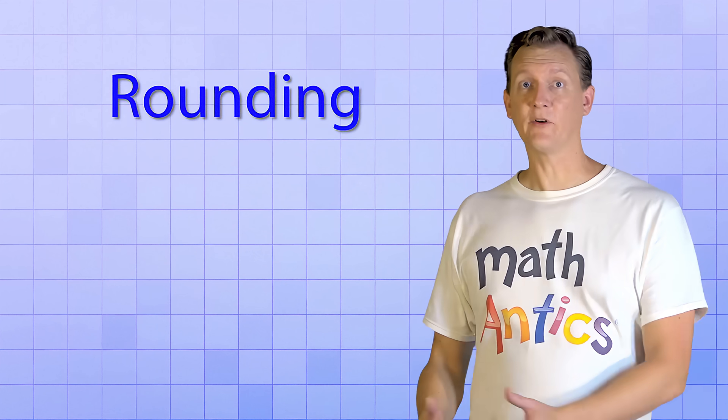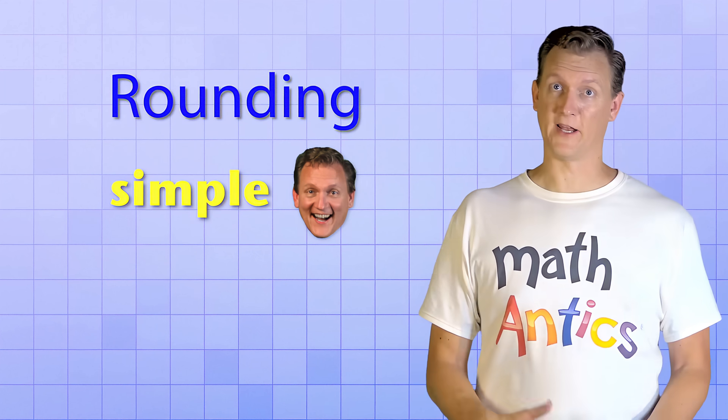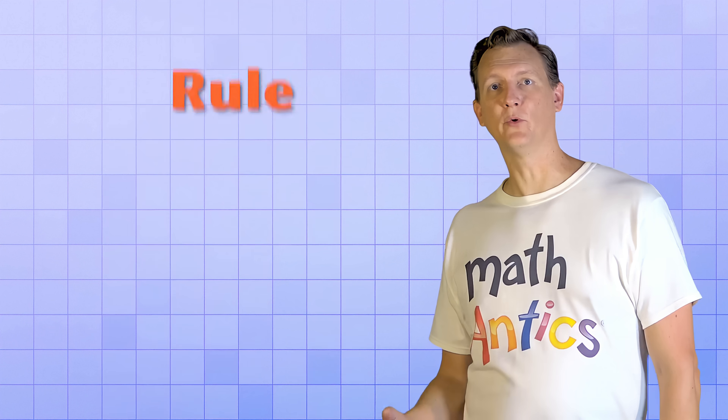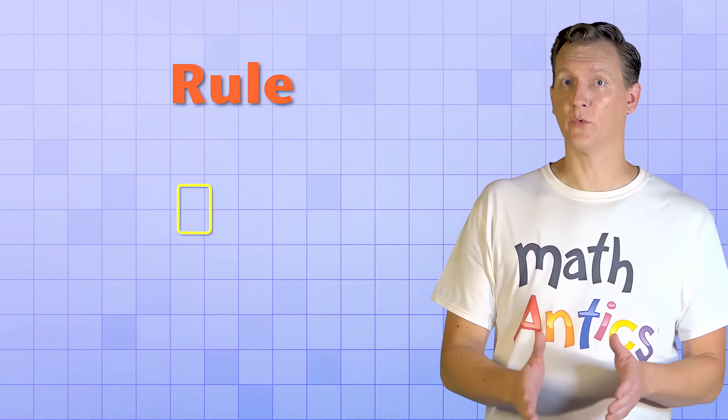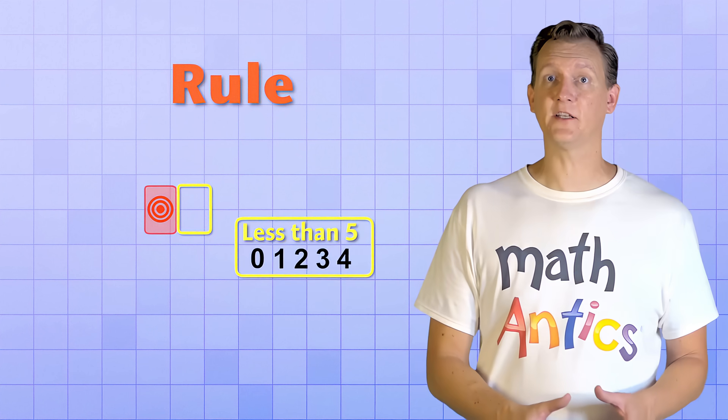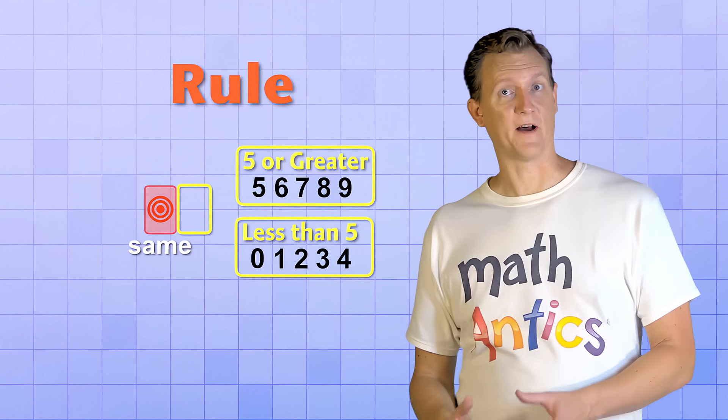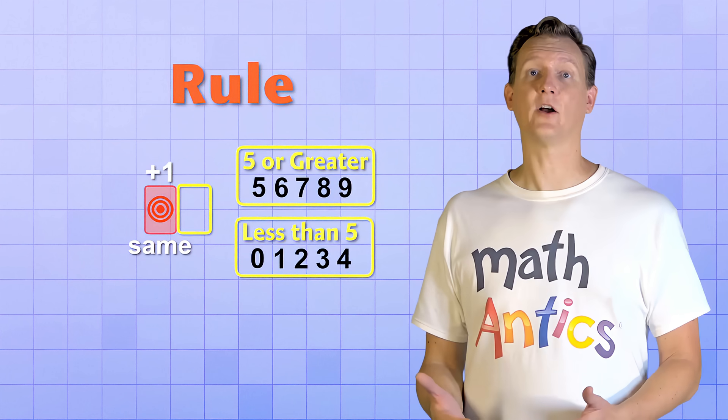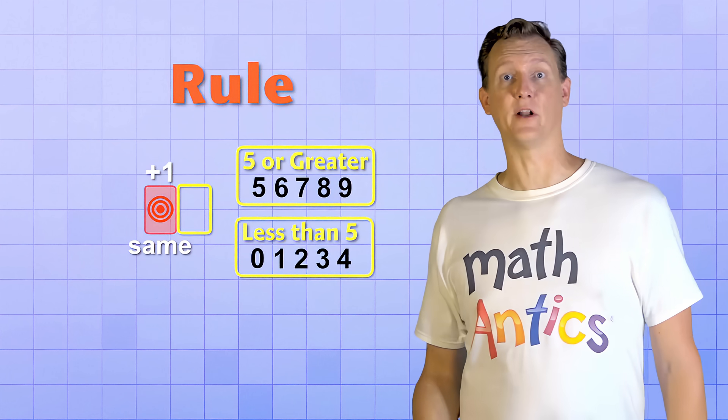So sometimes rounding a number is pretty simple, and other times it's a little more involved. The key is to remember the rule that if the digit to the right of the target is less than 5, we leave the target digit the same. But if it's 5 or more, we increase the target digit by 1, even if that causes a chain reaction with the bigger number places.